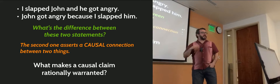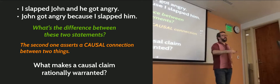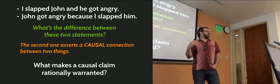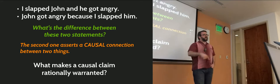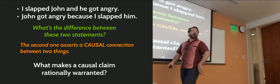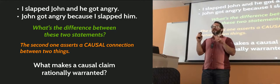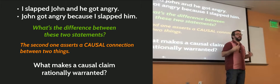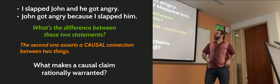The big question we have today is: what makes a causal claim rationally warranted? This does seem pretty plausible — if I slap John and then he gets angry immediately after, most of us would say yeah, seems like a pretty good inference. But there are other instances where one thing happens, then another happens, and we say the first caused the second, and we're not so sure about that. So how are we going to tell the reasonable, well-supported causal inferences from the ones that aren't?